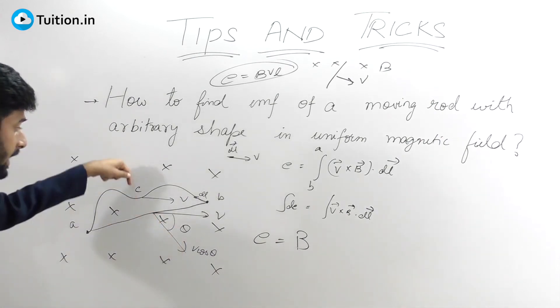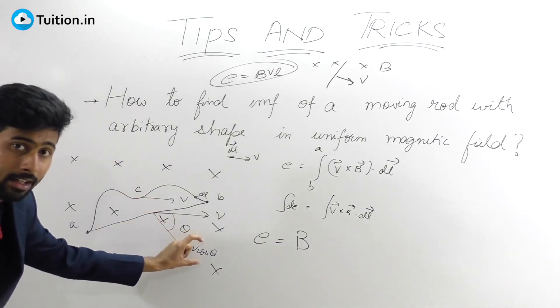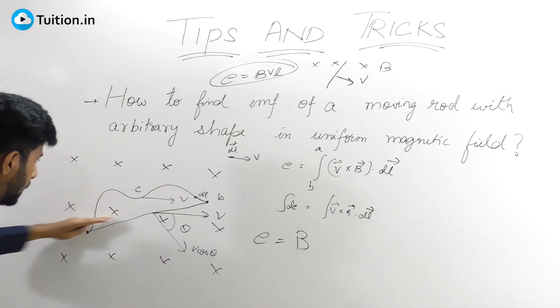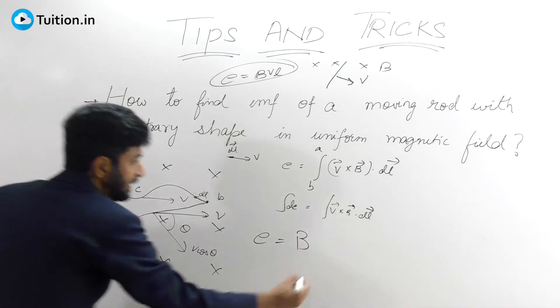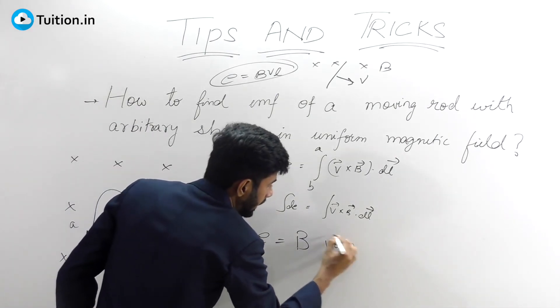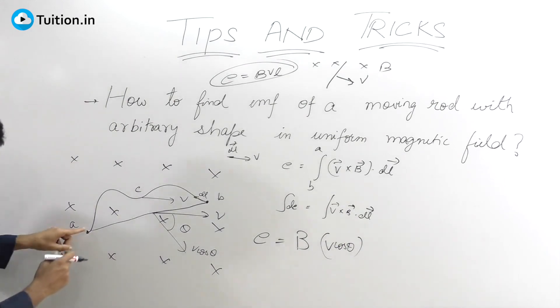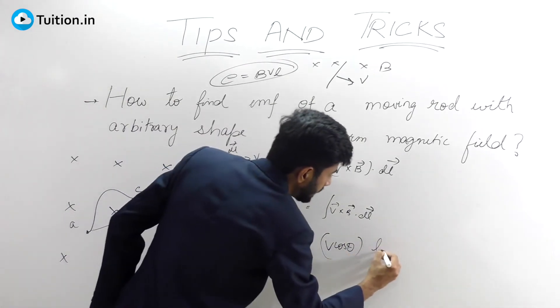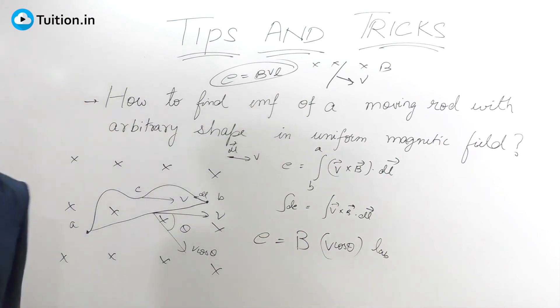Remember you need to take only that velocity which is perpendicular to the length of this rod. So we will take v cos theta, and that into the effective length AB. That's the EMF induced.